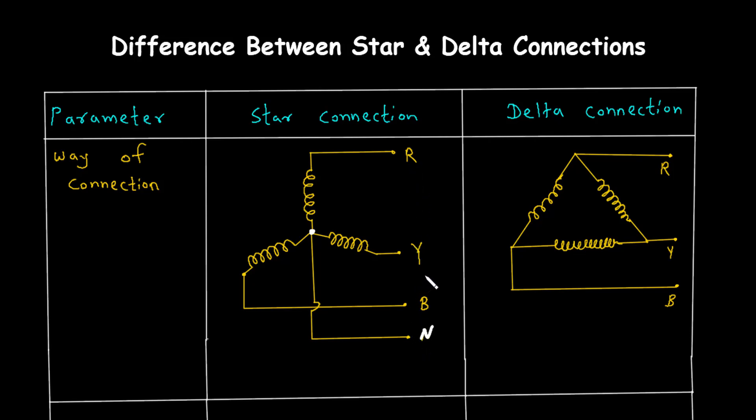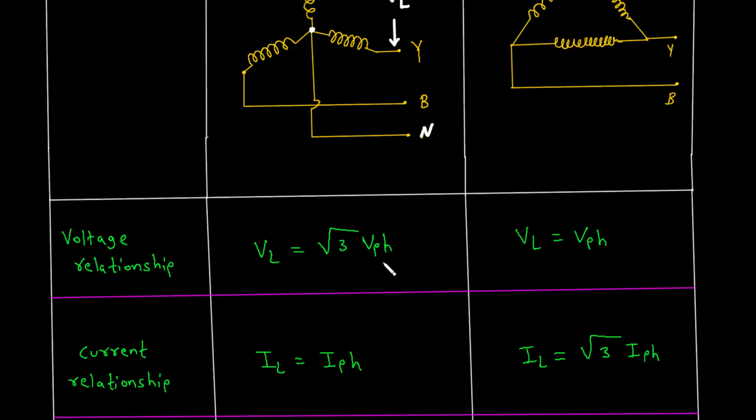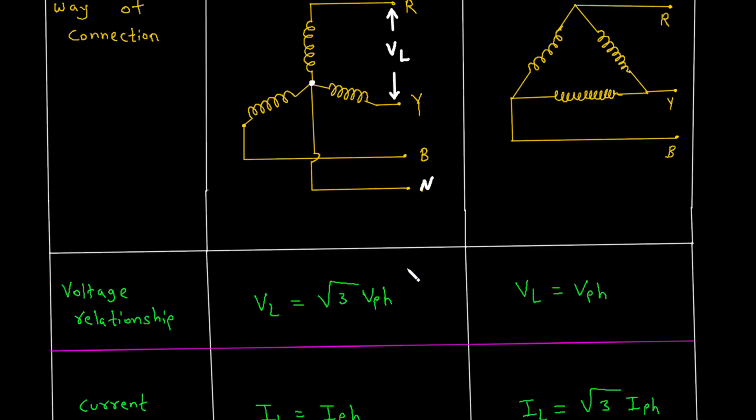In a star connection, the voltage between any two lines is known as the line voltage, denoted as V underscore L. This voltage is square root of three times the voltage across each individual winding, which we call the phase voltage, denoted as V underscore pH. Mathematically, this is expressed as V underscore L equals square root of three times V underscore pH.